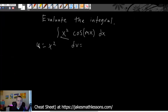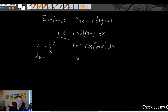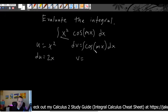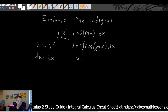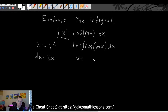For now, let's say our u is going to be x squared and our dv is going to be cosine of mx dx. The next step of an integration by parts problem, once you've determined u and dv, is to find du and v. We find du by taking the derivative of u: the derivative of x squared is 2x by the power rule. For v, the antiderivative of cosine of mx dx can be found using u-substitution.